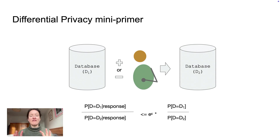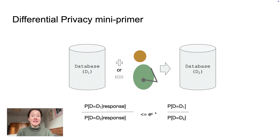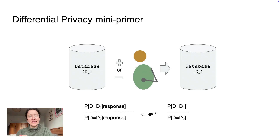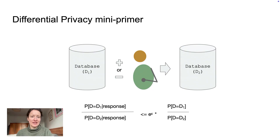A very simple definition of differential privacy is essentially this: we imagine that an attacker, or somebody who's curious, has the ability to query the database before a person is added, and then the database after the person is added or removed. They're trying to figure out whether a person was added or removed, and they may also be trying to figure out things about that person.